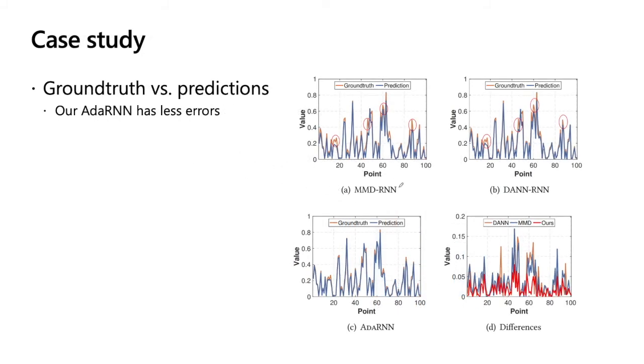We also have some case study. For example, we show the ground truth and prediction values for MMD RNN, DAN RNN, and our AdaRNN. We can draw their difference from this figure. We can see that our method gives the lowest errors.